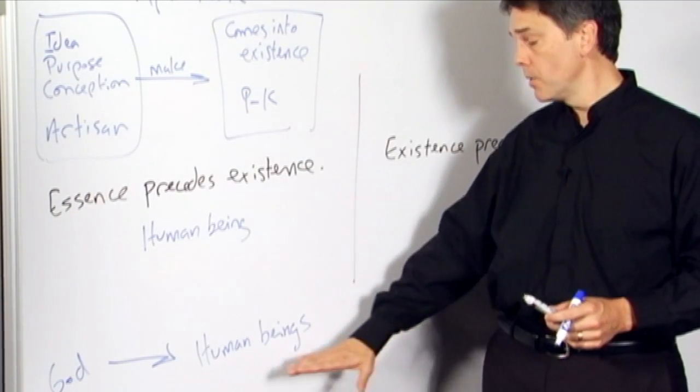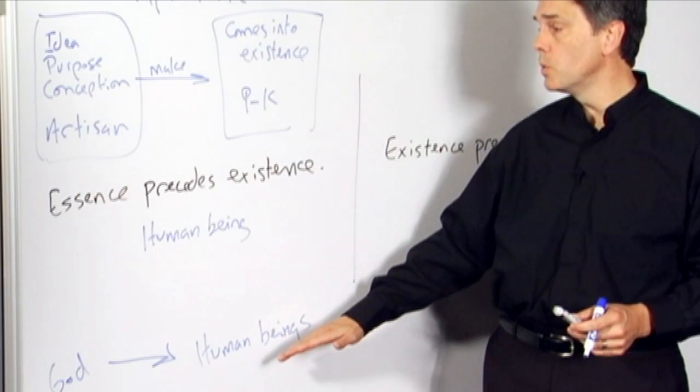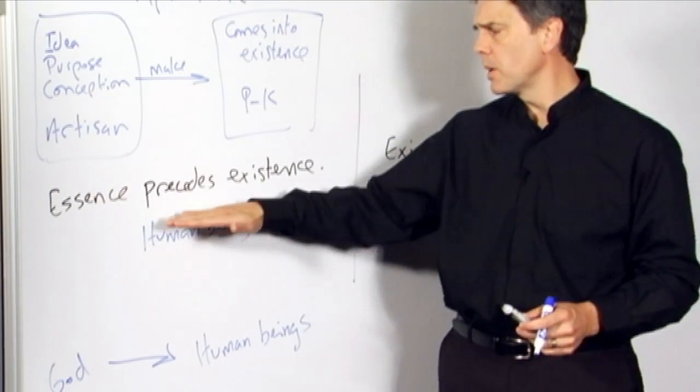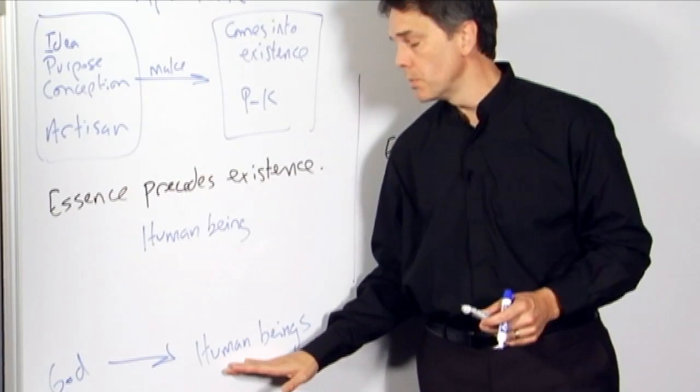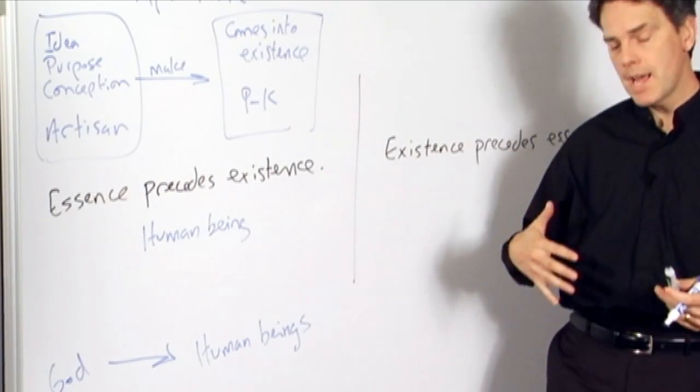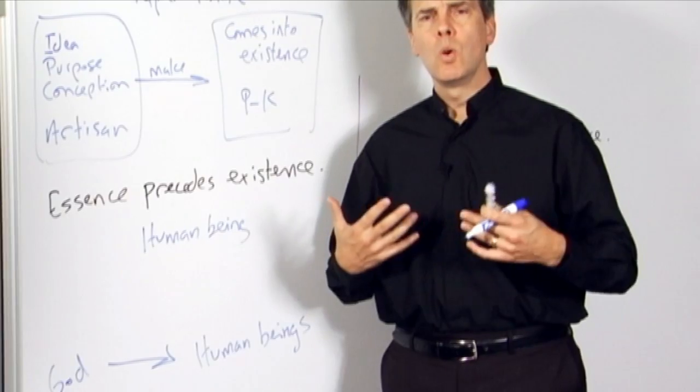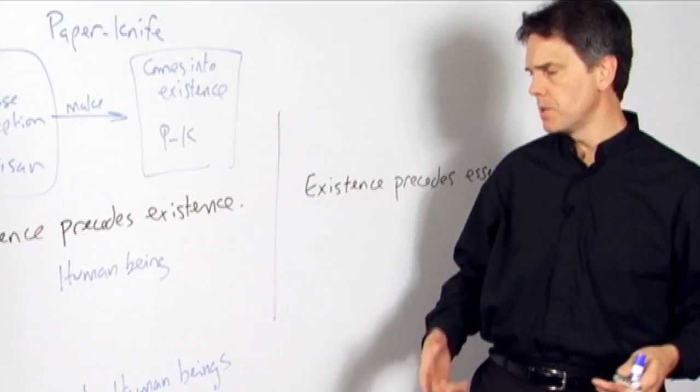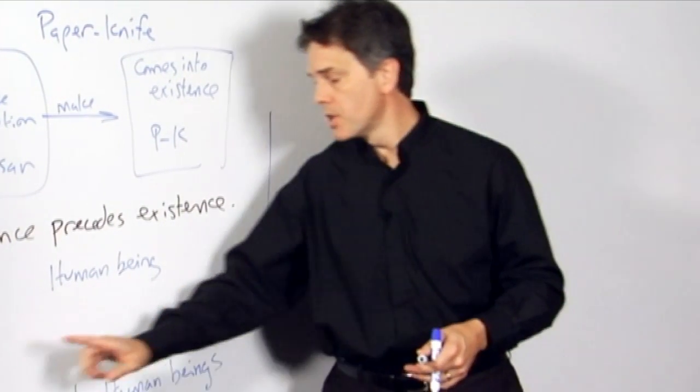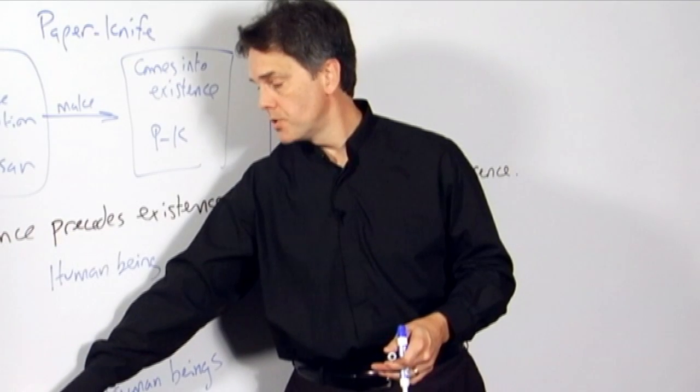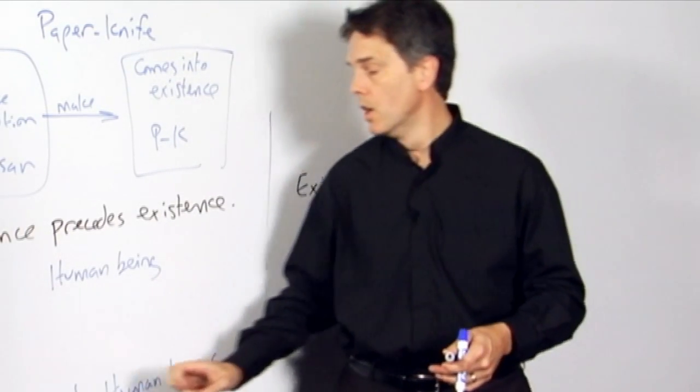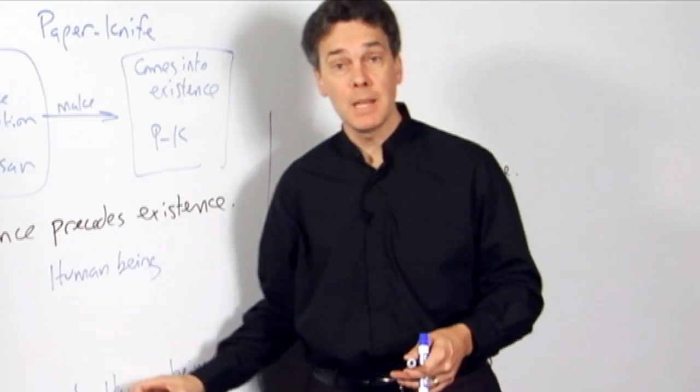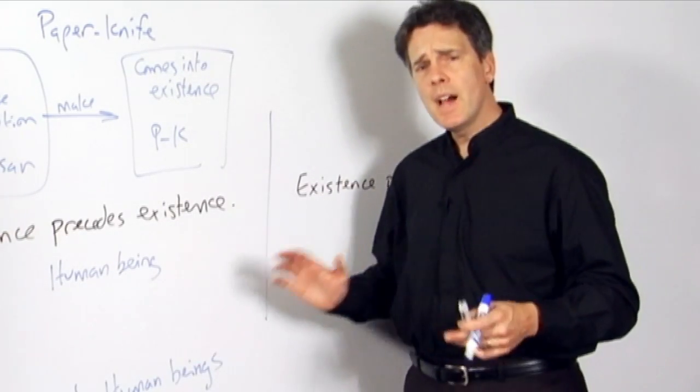And so according to this account of our existence as human beings, our essence precedes our existence. And then when we wax philosophical as human beings, according to this conception, we start asking, why are we here? What is the purpose of our existence? What is the meaning of my life? The answer is, my purpose is to fulfill God's purpose. I am here, just as the paper knife is here, to do whatever it was that God made me for.